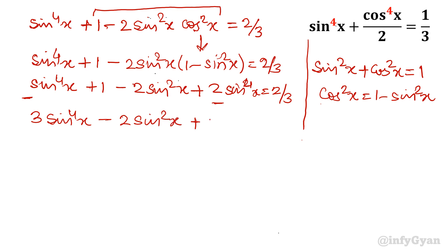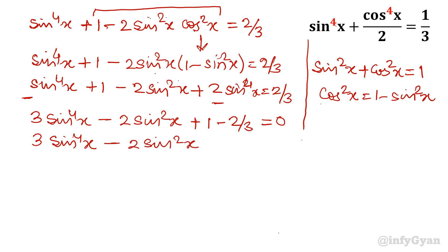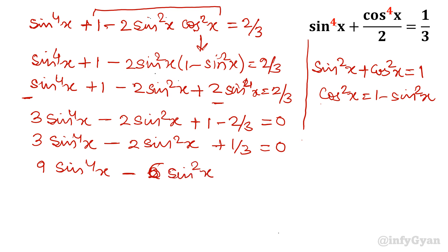So we write 3sin⁴x minus 2sin²x plus 1 minus 2 over 3 equals 0. Taking 2 over 3 to the left side, 1 minus 2 over 3 becomes 1 over 3. So 3sin⁴x minus 2sin²x plus 1 over 3 equals 0. Multiplying through by 3 to clear the fraction gives 9sin⁴x minus 6sin²x plus 1 equals 0.